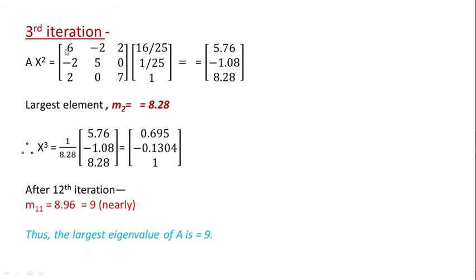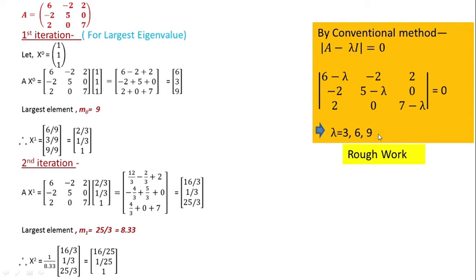In the third iteration, multiply A and X2 to get the next values, where the largest element is 8.28, so M2 = 8.28. You divide all elements by this to get X3. After repeating these steps, in this example after 12 iterations M11 is ultimately 8.96, which is nearly equal to 9. So the largest eigenvalue obtained by power method is 9, exactly matching the conventional result.